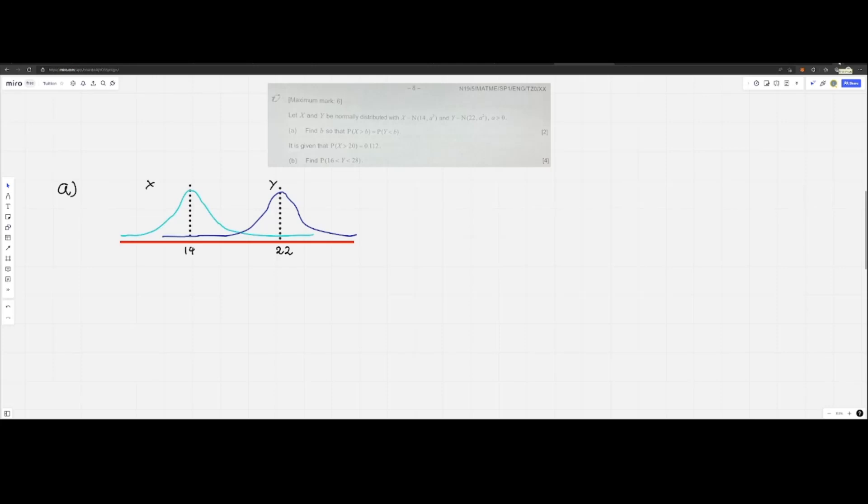The first thing you want to do to solve this question is to sketch the information given of the two normal distributions. If you've sketched the diagram, it should look as what is shown. Since both are normal distributions with the same standard deviation, they have a similar shape.